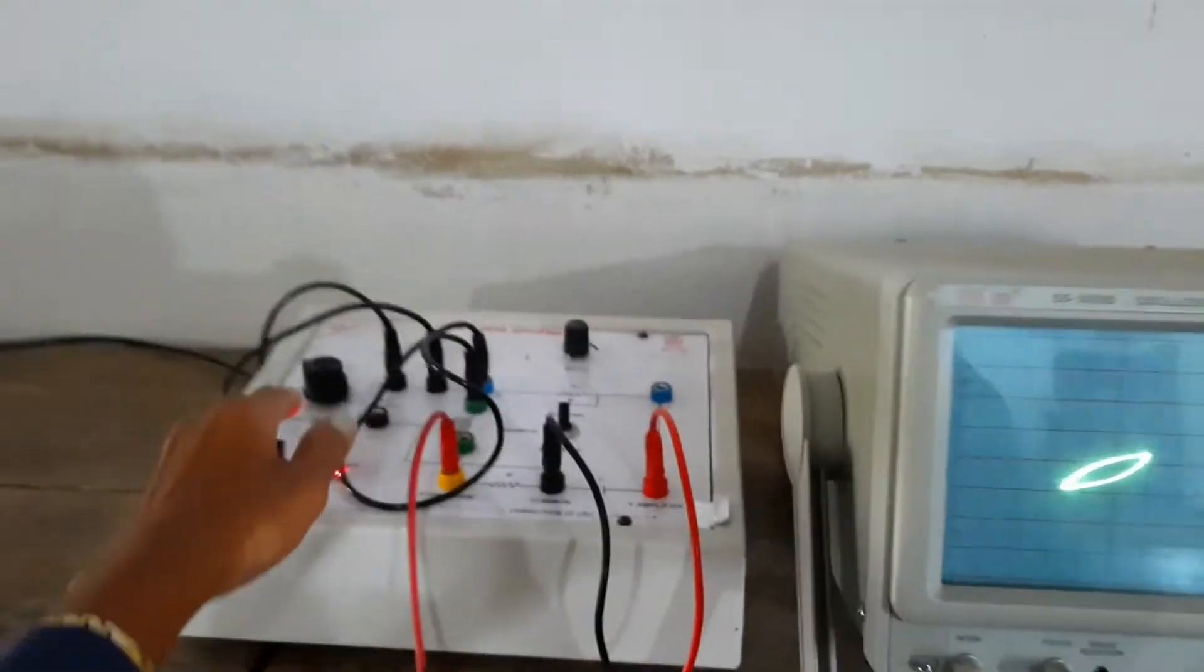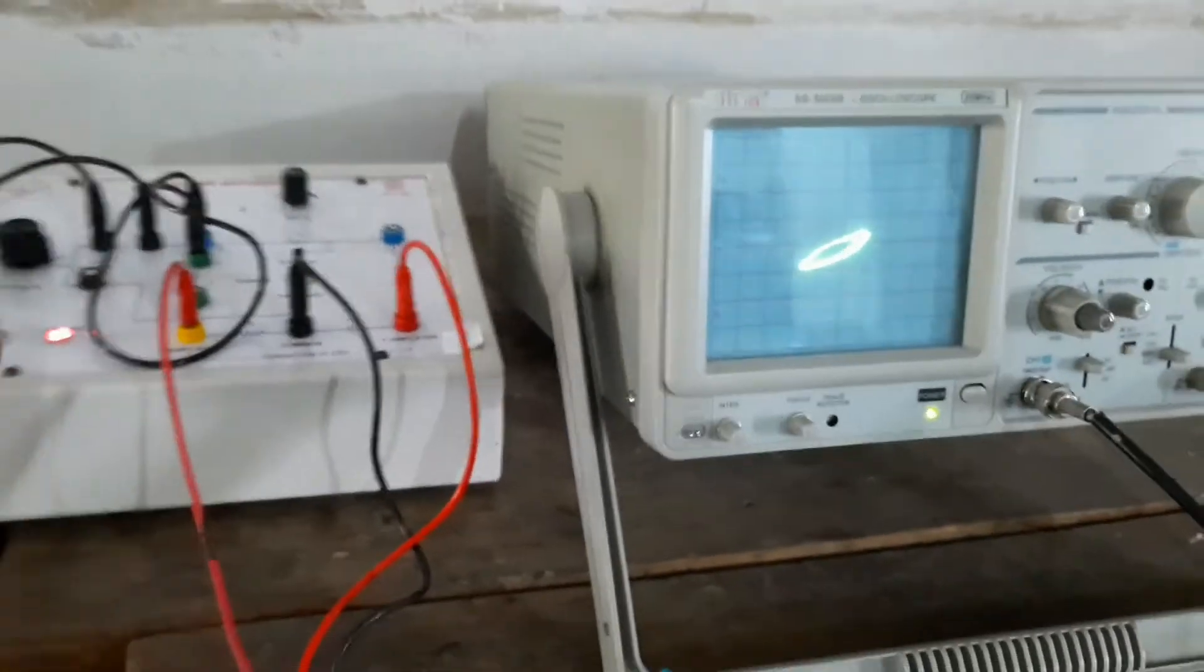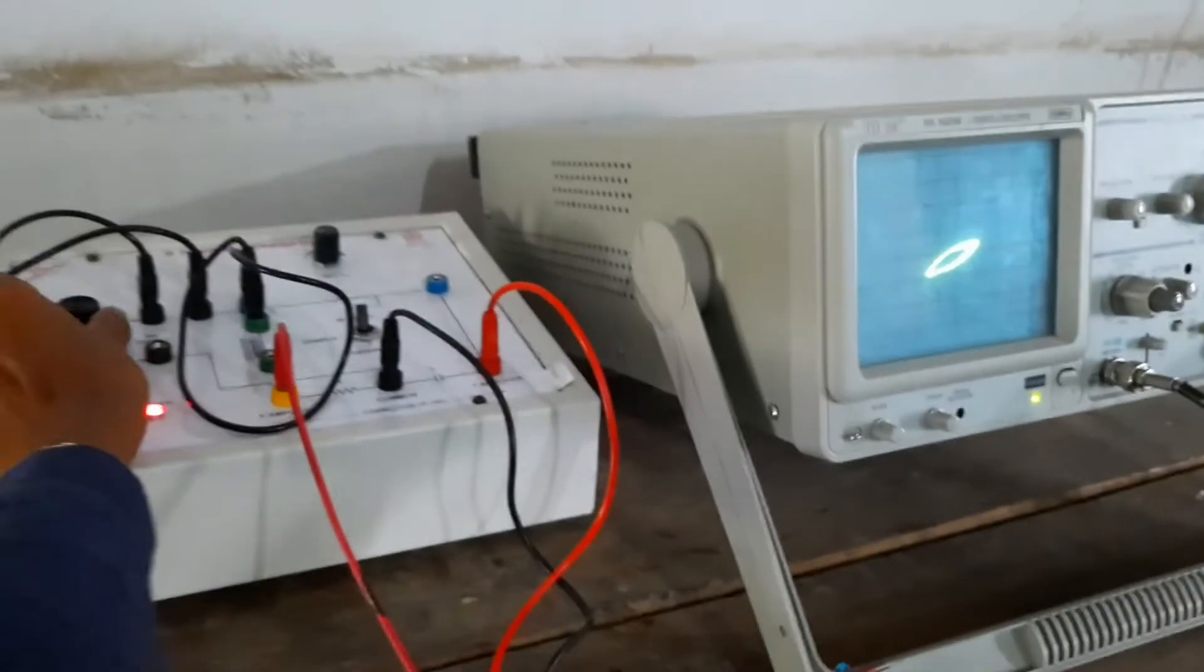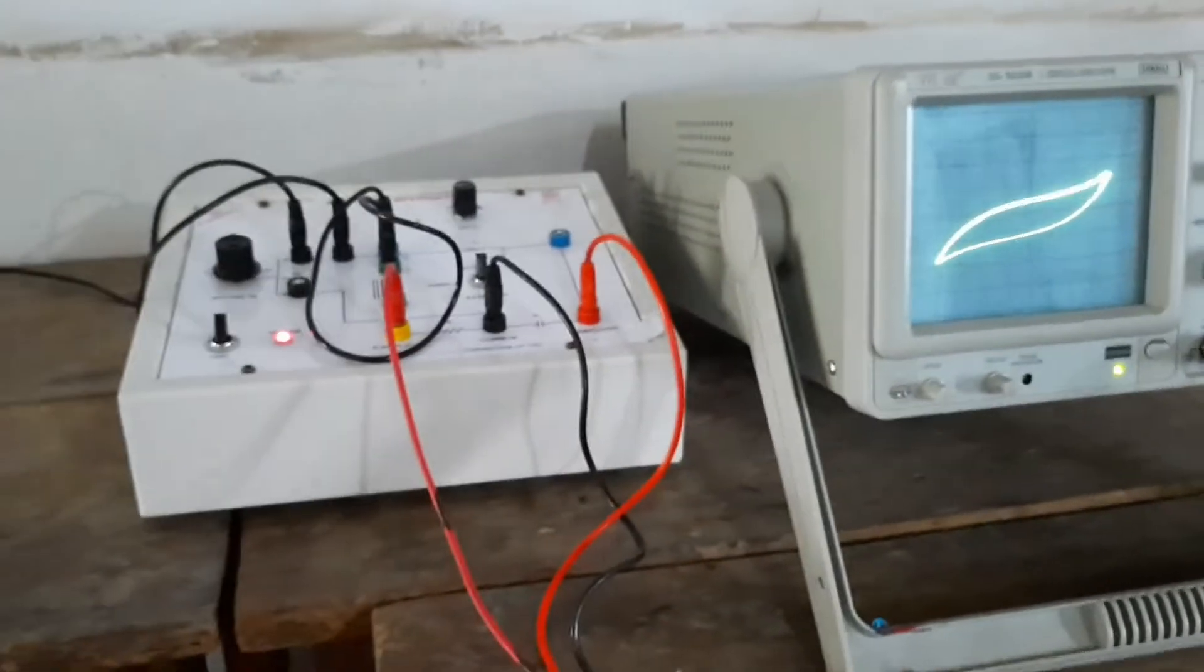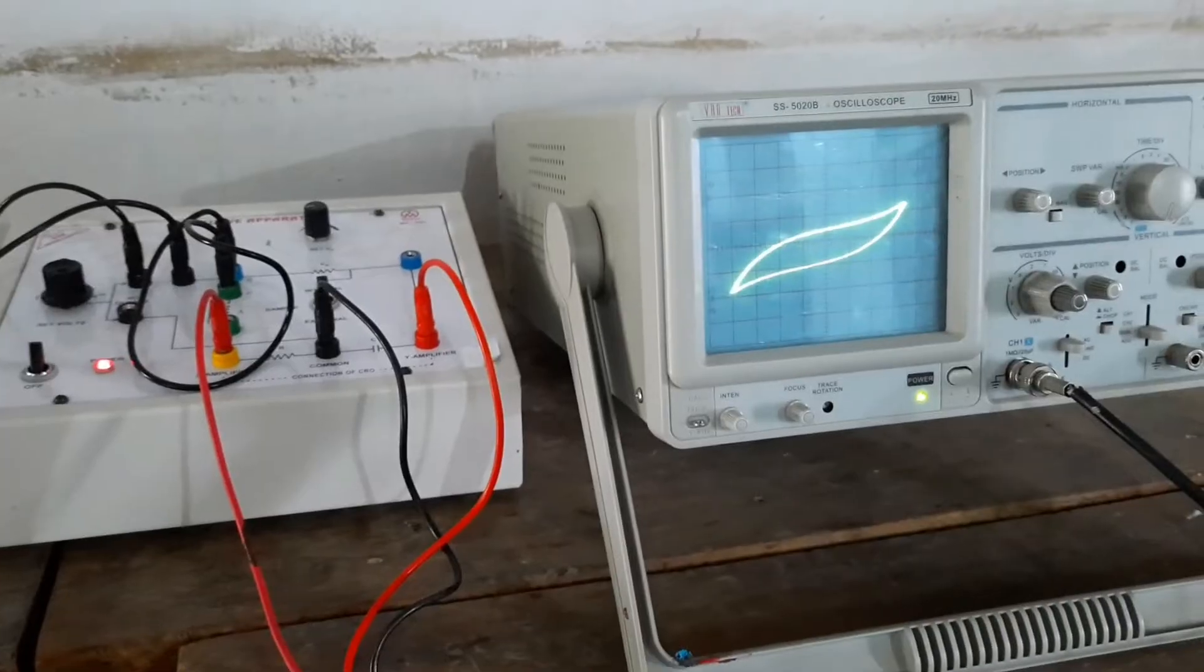Then if I increase voltage here, if I will increase the voltage to the 6 volt, then you can see the curve's area of the curve is going to increase.